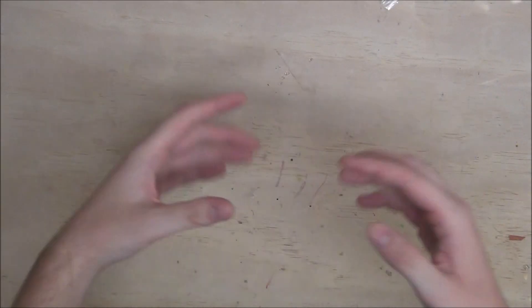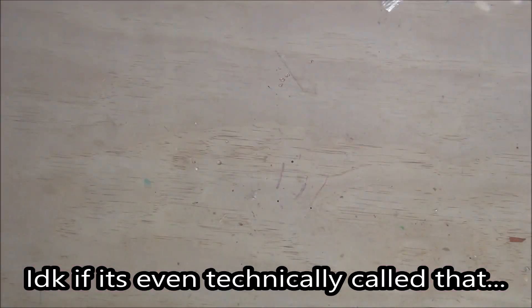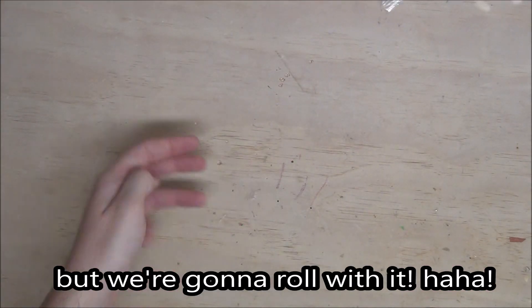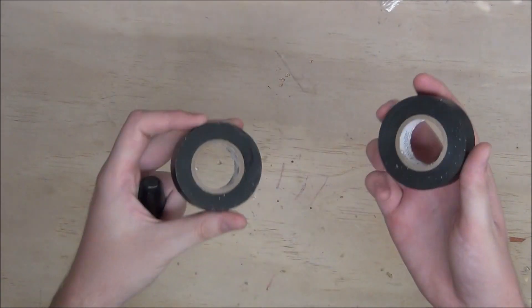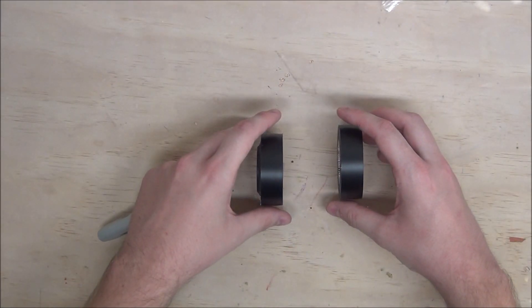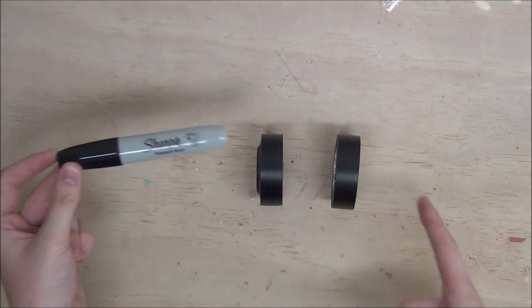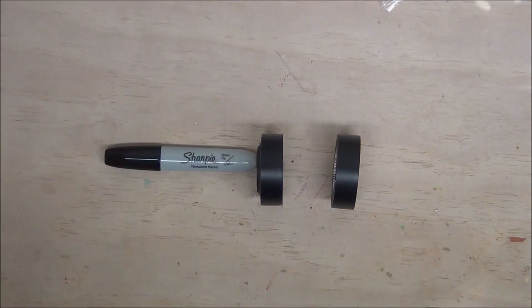Now before we get into this, I guess the first thing we should address is what the heck is a screw switch? Well, a screw switch is basically comprised of three parts. You have the two nuts, which my electrical tape will symbolize, and then you have the bolt that goes with the nuts that my Sharpie will symbolize.